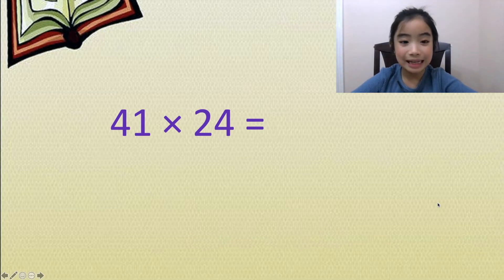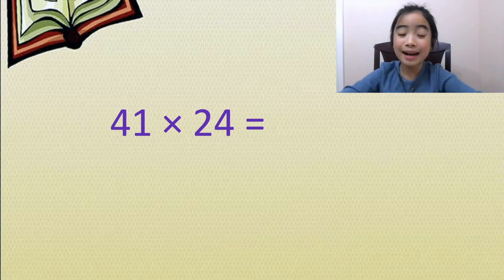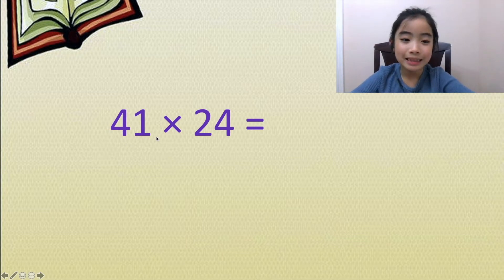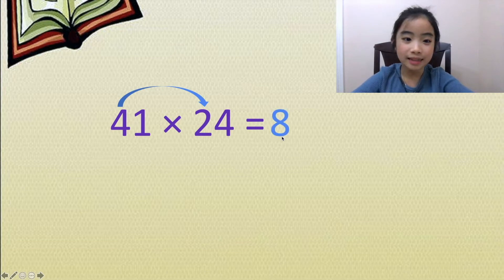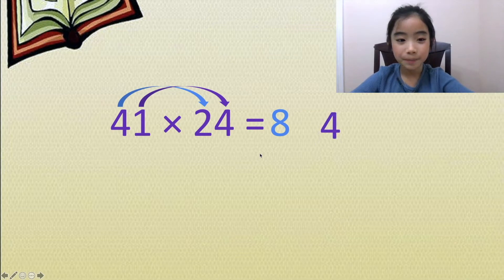Now let's get the second question. It's the question that my friend Helen asked. I think it's a bit harder, but let's figure it out. The question is 41 times 24. Again, let's multiply the tens place. We have 4 times 2 equals 8. Second, let's multiply the ones place. 1 times 4 equals 4.